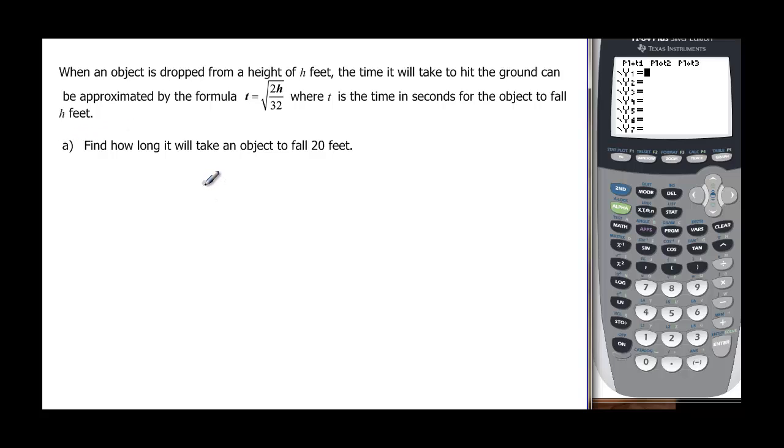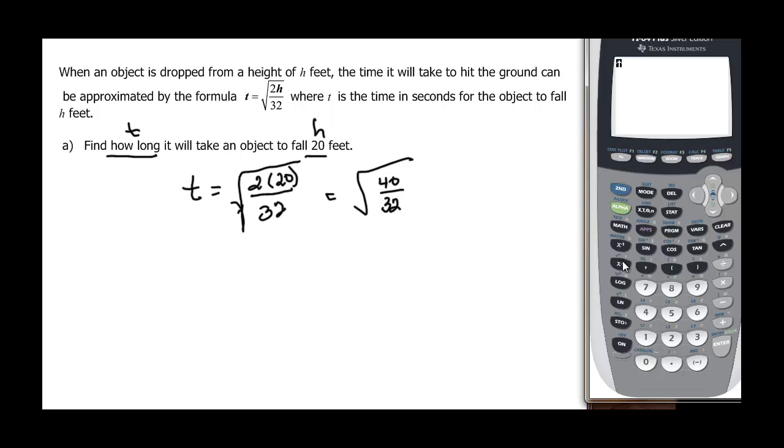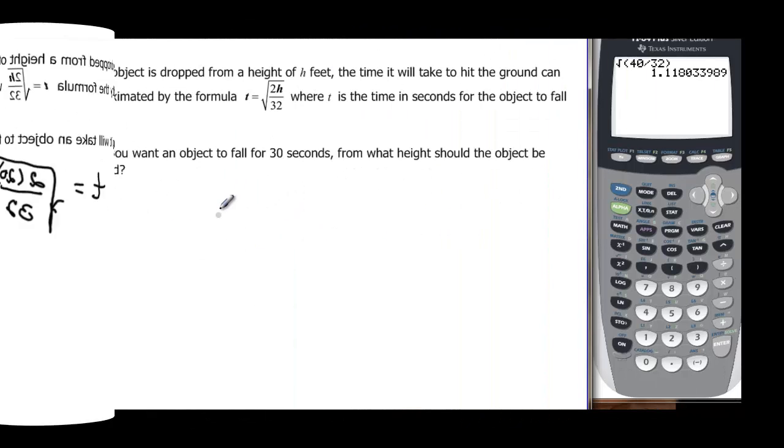So how long will it take an object to fall 20 feet? This is an h, 20 is an h, so we don't know what time is, it's asking us how long, so that's a t. We have the square root of 2 times our h, which is 20, all over 32, which is the square root of 40 over 32. I'm not even going to simplify that, I'm just going to go straight to my calculator and do the square root, second x squared, of 40 divided by 32, close the parenthesis, and we find out that it takes approximately 1.12 seconds to fall 20 feet.